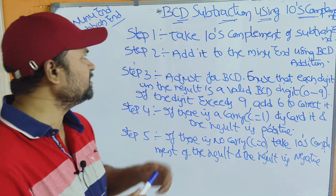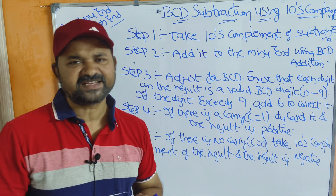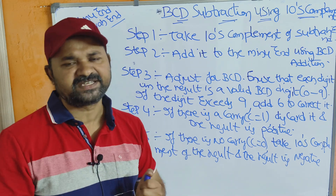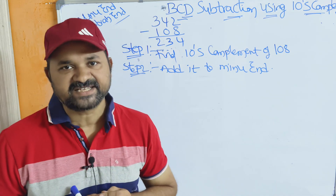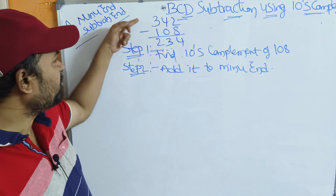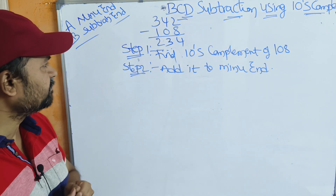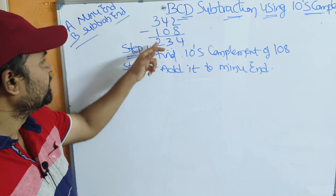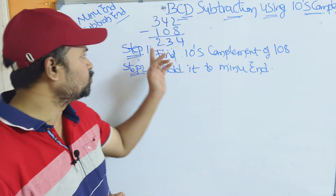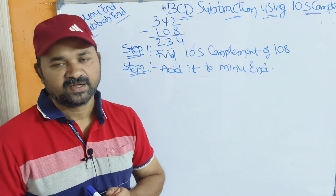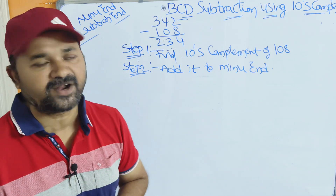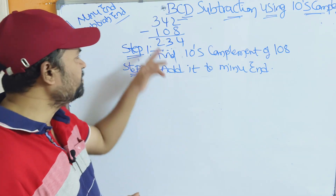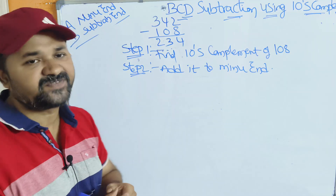We are going to see two examples — the first without carry and the second with carry. Now the first example: 342 minus 108. The direct subtraction gives 12 minus 8 equals 4, 3 minus 0 equals 3, 3 minus 1 equals 2, so 234 is the result. Now let us verify this result using the 10's complement approach. Step 1: Find the 10's complement of the second number, that is 108.